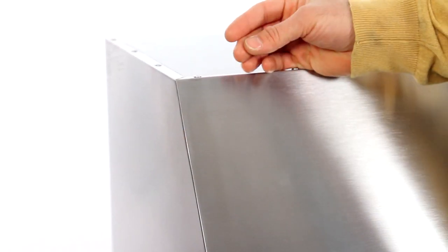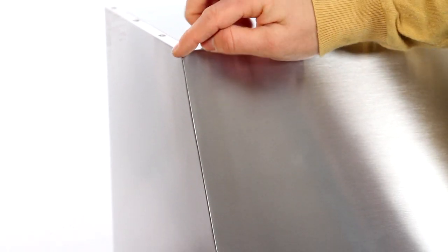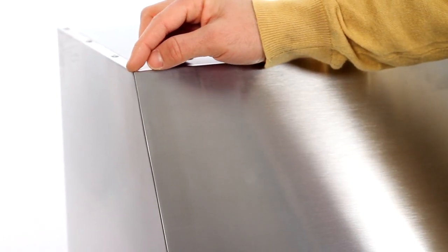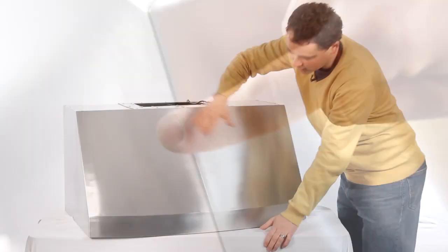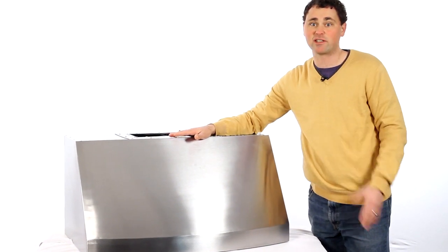Another thing I wanted to show you was these seams here on the edges. They're seamless. Other manufacturers will just fold the metal together which can be dangerous and also unsightly. But what they've done here is they've welded it and then hand finished it, giving you a really seamless 100% stainless steel look. It's got to look great in any kitchen.